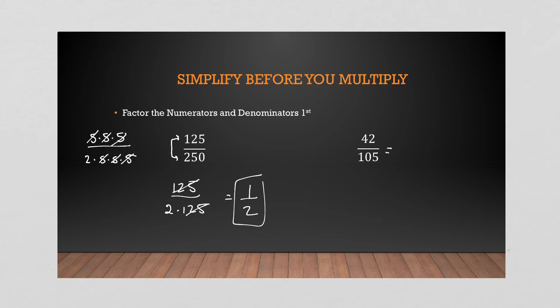So what about 42 over 105? Well, 42 for me is six times seven, and 105 is five times 21. Well, six is two times three, and then I have seven, and 21 is three times seven. So now I see cancel, cancel, cancel, cancel, and I'm left with two over five.